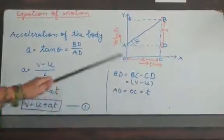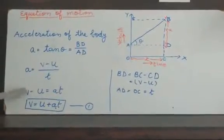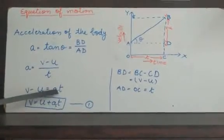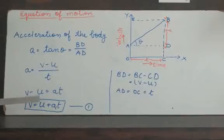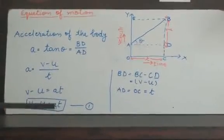We will place both the values here. BD is V minus U and AD is T. After cross multiplication, we will get V minus U is equal to aT. We will shift U to this side of the equal sign. We will write down V is equal to U plus aT. This is our first equation of motion.